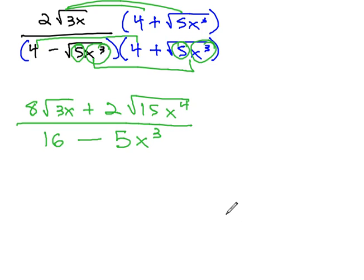And so, we end up with 8 square root of 3x, plus 2 square root of 15x to the 4th, over 16 minus 5x cubed.